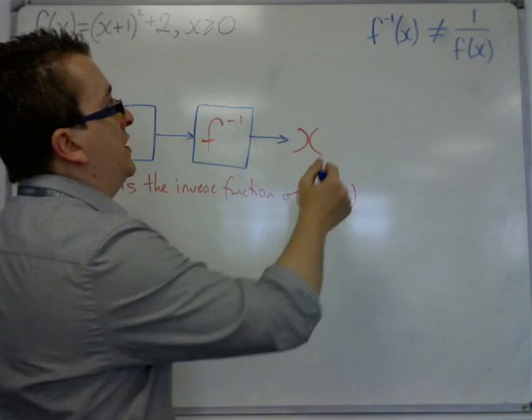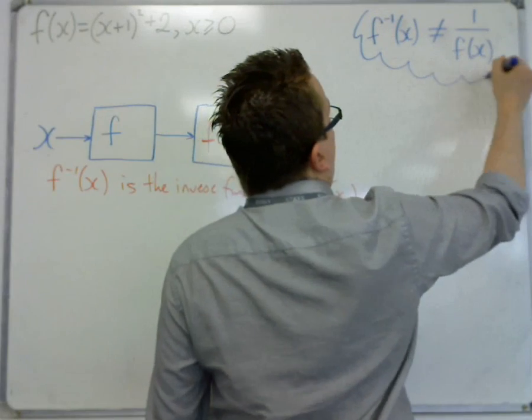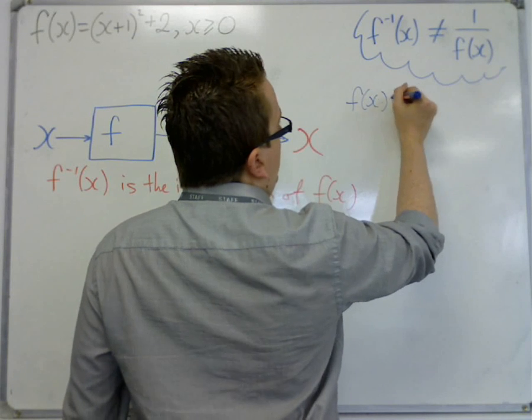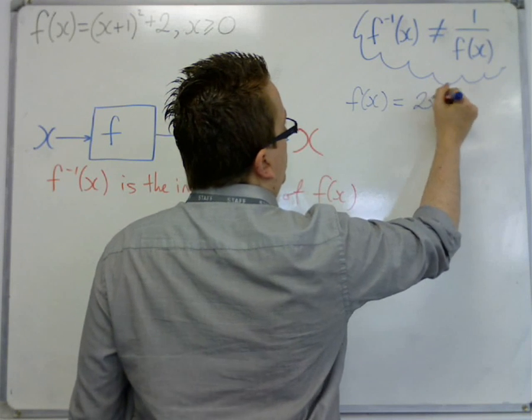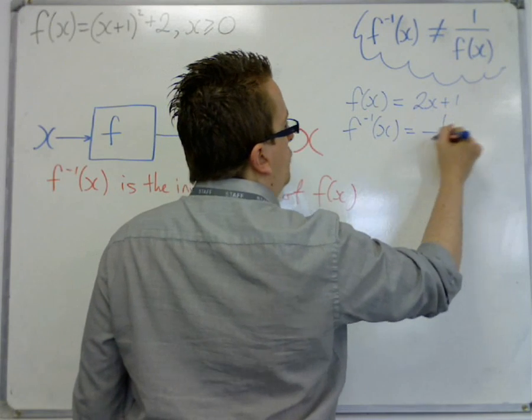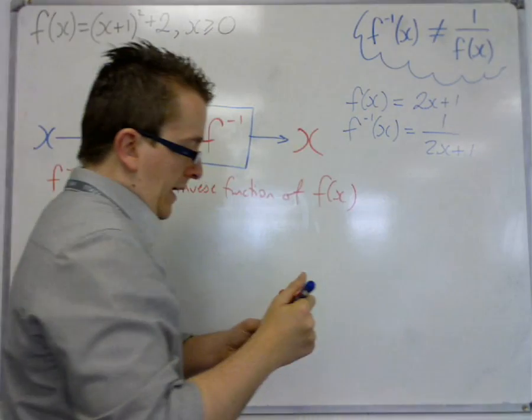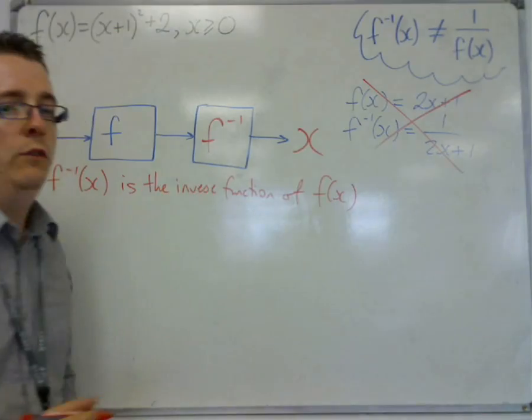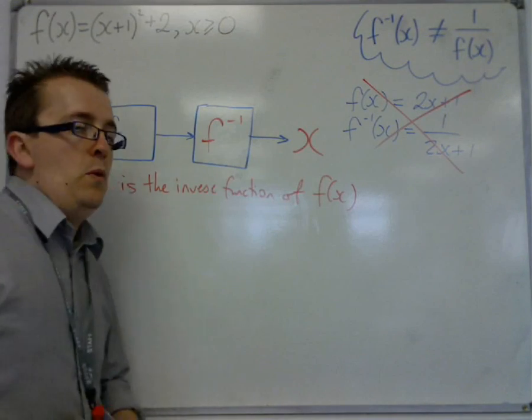So you need to keep this in your mind because if you're just thinking, well, let's say that f of x is 2x plus 1, then f to the minus 1 of x is 1 over 2x plus 1. This is rubbish. That's completely wrong. So beware of this.